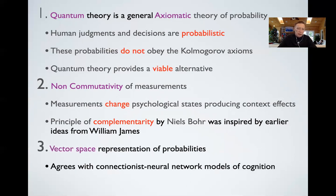Another reason is that when we work with quantum probability theory, it puts probability theory into a vector space — and cognitive scientists like to work with vector spaces. They like to represent their ideas of concepts and decisions in some kind of vector space, like connectionist neural network models, which use vector spaces to represent the dynamics of thought processes. So that's the third reason.